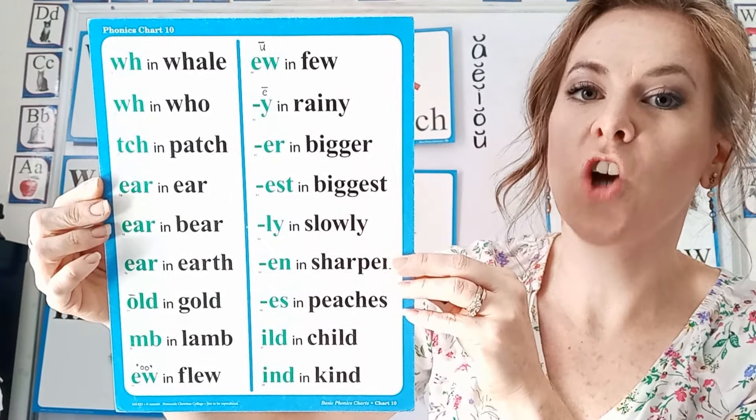Let's begin up here with the WH in whale. The W in whale makes a W sound, but the H is silent. So here we have wheat, which, white, when, wheel, and while. These all have our WH special sound that says W, but the H is silent.